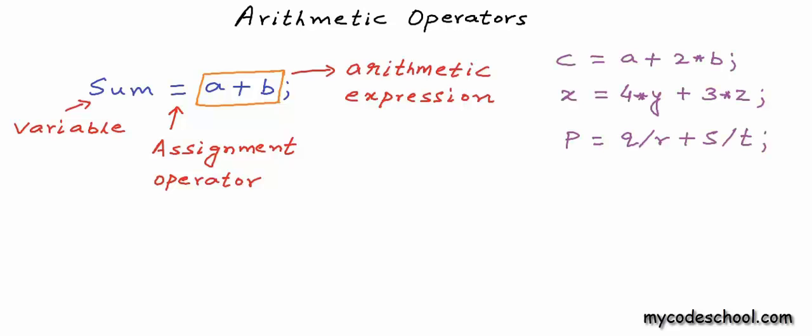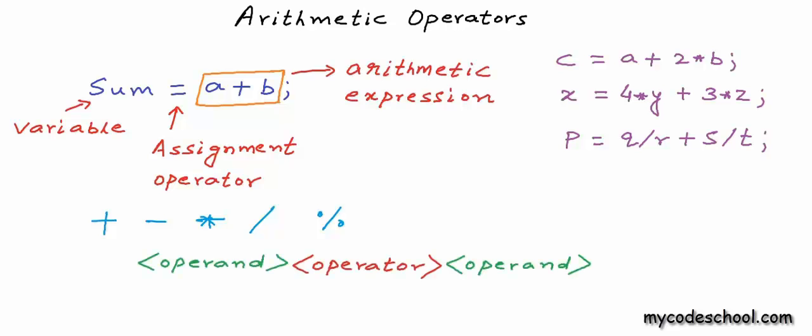We could have a really complex expression with multiple constants, variables, and operators. We have written some more instructions with arithmetic expressions containing more than one operator. But we must understand how to create syntactically correct expressions in code and how these expressions will get evaluated. All five arithmetic operators we discussed are binary operators — an operator that operates on two operands is called a binary operator. The operand is the object on which the operation is being performed.